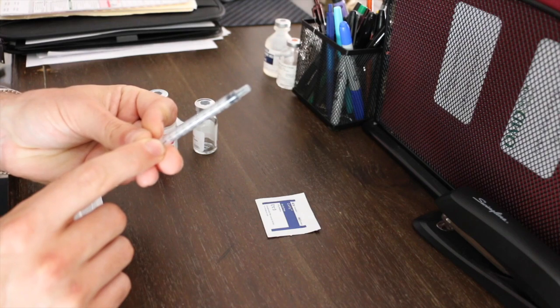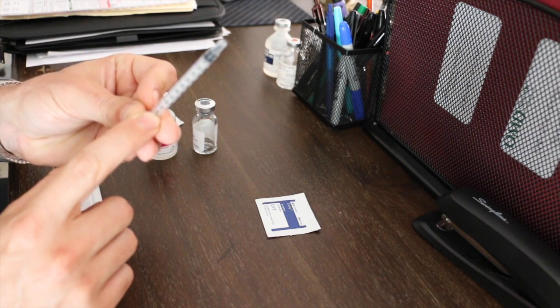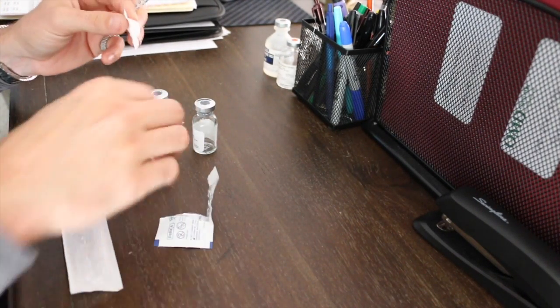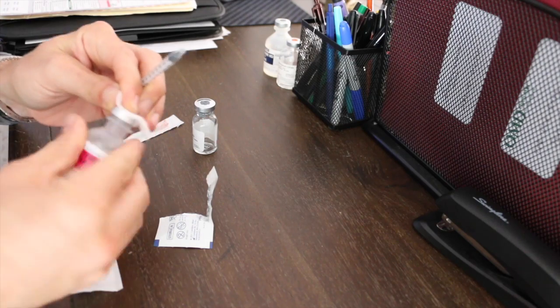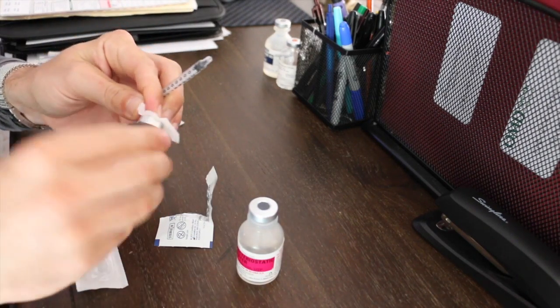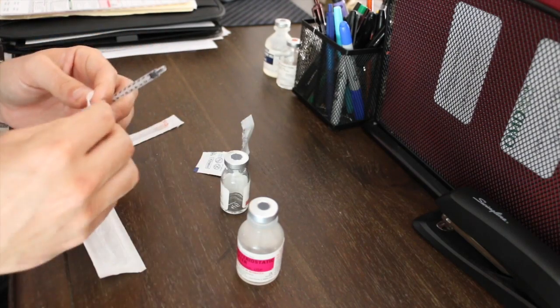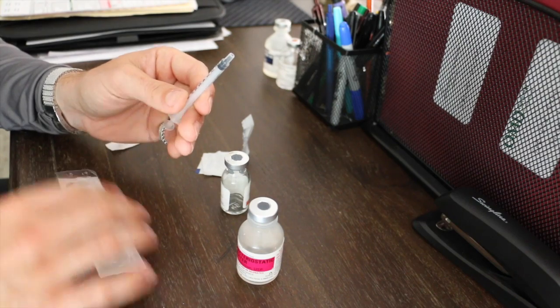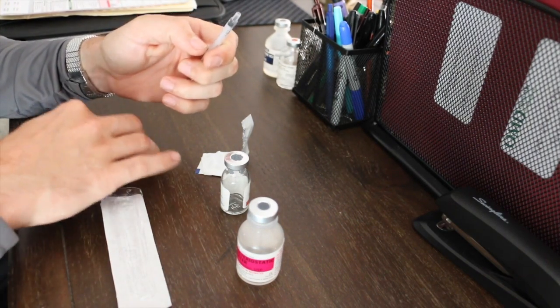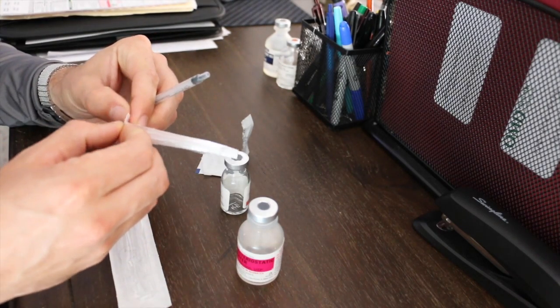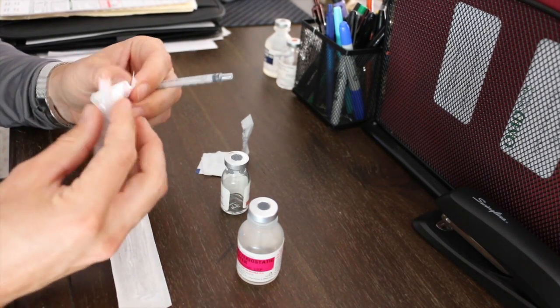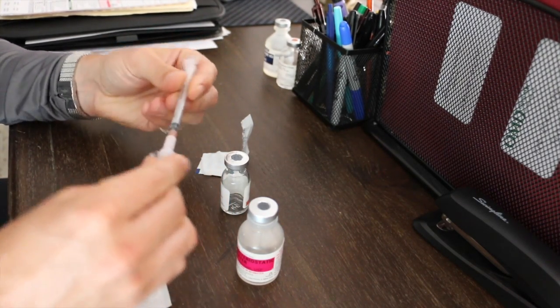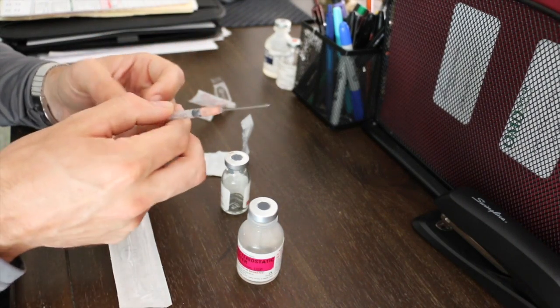First thing is keep it sterile. Wipe down the top of your bacteriostatic water with a little alcohol, same thing with whatever it is that you're injecting. Another important tip: don't touch the tip of the syringe. It's sterile when it comes out of the packaging. You might have gotten a package that has the needle already attached to the syringe, in that case you just have one less step. You just connect them.